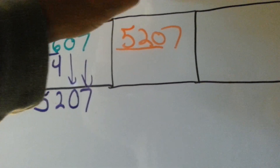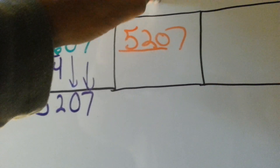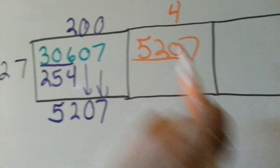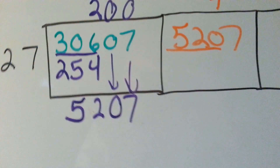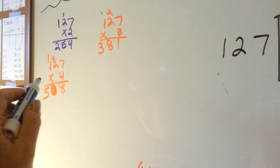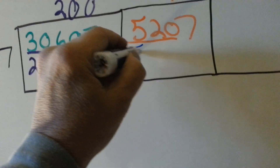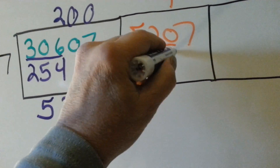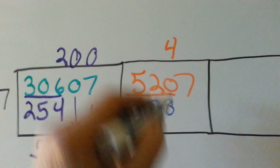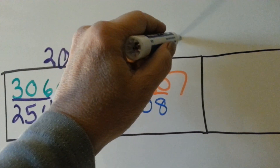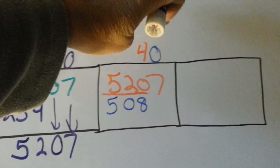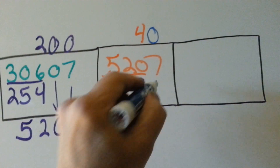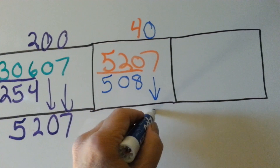508 fits, so we're going to put 4 above the zero because that's the number we're putting it into. We've got 508. Now we can put a zero here because we're done working up there, and it's the next digit's turn to come down.